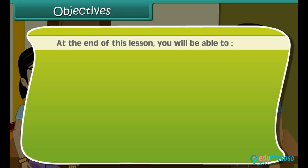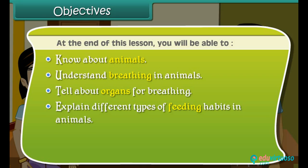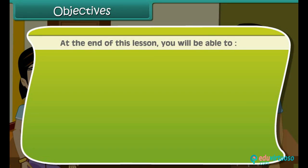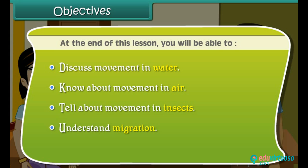Objectives: At the end of this lesson you'll be able to know about animals, understand breathing in animals, tell about organs for breathing, explain different types of feeding habits in animals, know about movement in animals, describe movement on land, discuss movement in water, know about movement in air, tell about movement in insects, and understand migration.